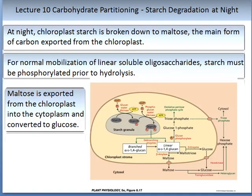At night, chloroplast starch can be broken down to maltose, the main form of carbon exported from the chloroplast. For normal mobilization of linear soluble oligosaccharides — oligosaccharides meaning many saccharides — starch must first be phosphorylated prior to hydrolysis. Maltose is exported from the chloroplast and into the cytoplasm and converted into glucose. The figure on the slide is from the textbook, figure 8.17, and illustrates the concepts described above.